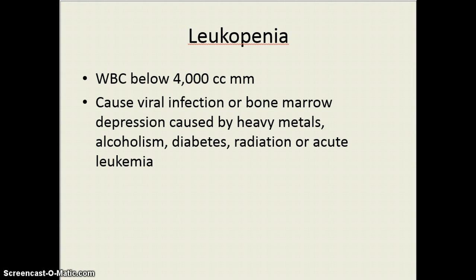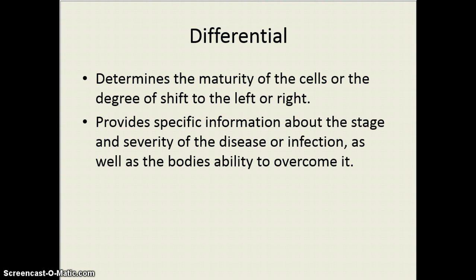People taking radiation therapy or those with acute leukemia may have a low white blood cell count. These people are at very high risk for infection because they do not have the white blood cells to respond when the body recognizes it's in trouble. Looking at the differential, the neutrophils, monocytes, and all those cells help us know about the maturity of the cells and give us information about how severe the infectious process is in the body at this time.